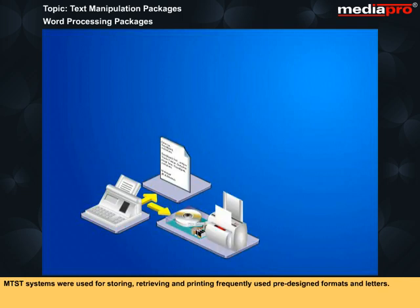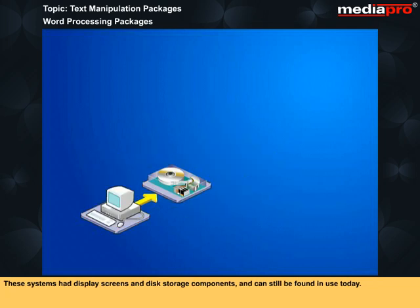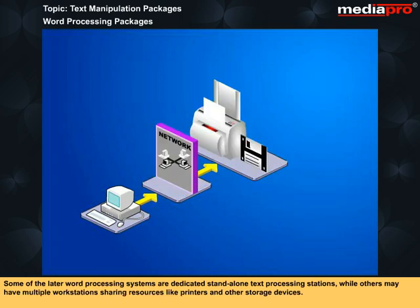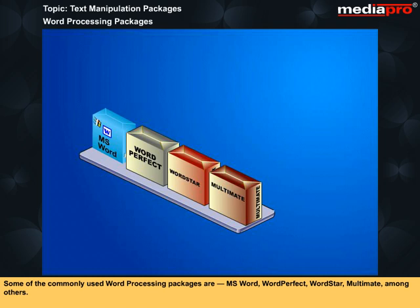An enhancement to MTSTs were the dedicated word processors, in which both hardware and software were dedicated only to the tasks of processing textual data. These systems had display screens and disk storage components and can still be found and used today. Some of the later word processing systems are dedicated stand-alone text processing stations, while others may have multiple workstations sharing resources like printers and other storage devices. The pre-written word processing packages available today are much superior to their predecessors and are compatible across most systems. Some of the commonly used word processing packages are MS Word, WordPerfect, WordStar, and Martinate, among others.